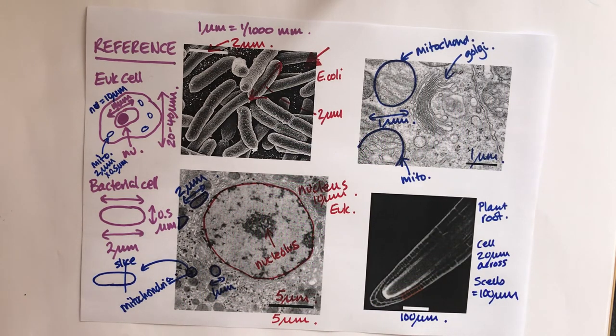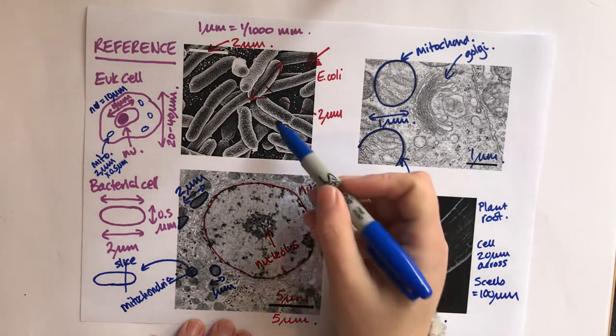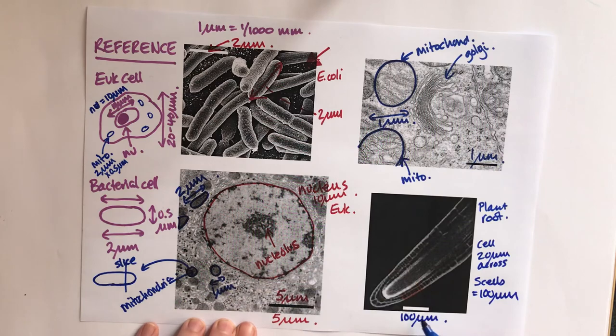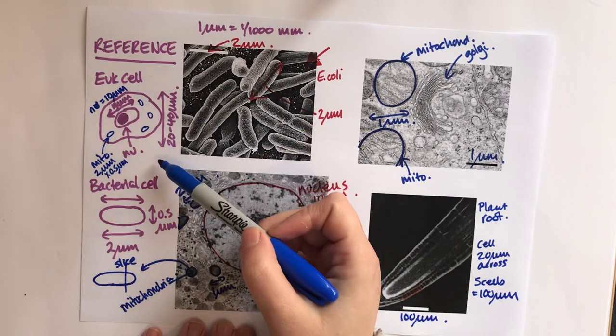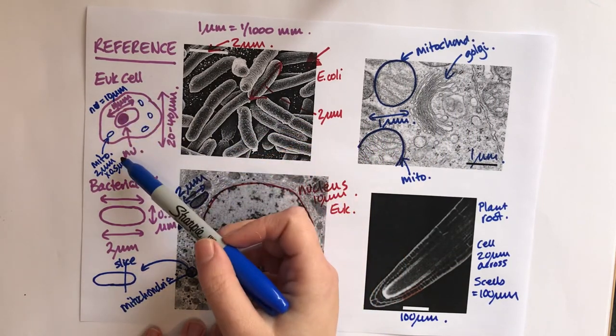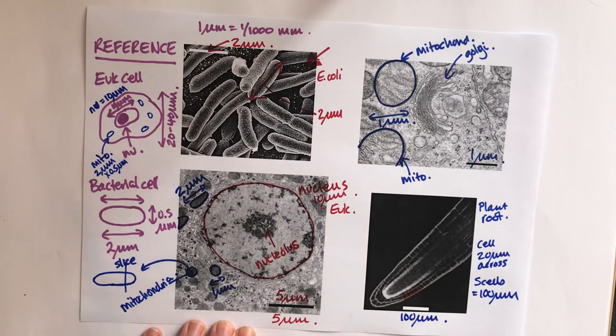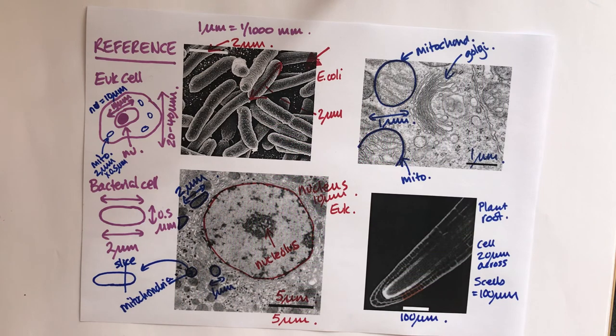You need to start by working out, well what am I looking at? You should have been able to spot what you were looking at anyway. It's what am I looking at, what do I know about my reference points? How big's a eukaryotic cell, how big's the nucleus, how big's the mitochondria, how big's a bacterial cell? From that you should be able to work out roughly how big you think your scale bars are.